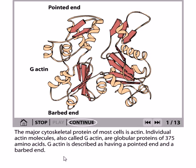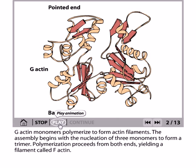Individual actin molecules, also called G-actin, are globular proteins of 375 amino acids. The G-actin is described as having a pointed end and a barbed end — this is the pointed portion, and this is the barbed end portion. The G-actin monomers polymerize to form actin filaments. The assembly begins with the nucleation of monomers to form a trimer.